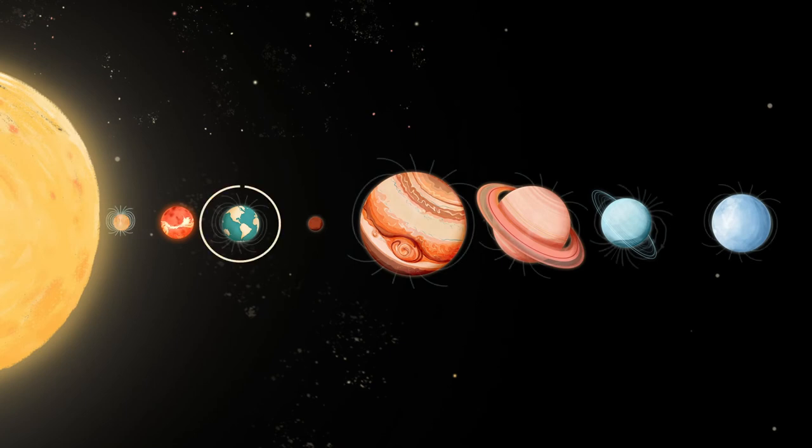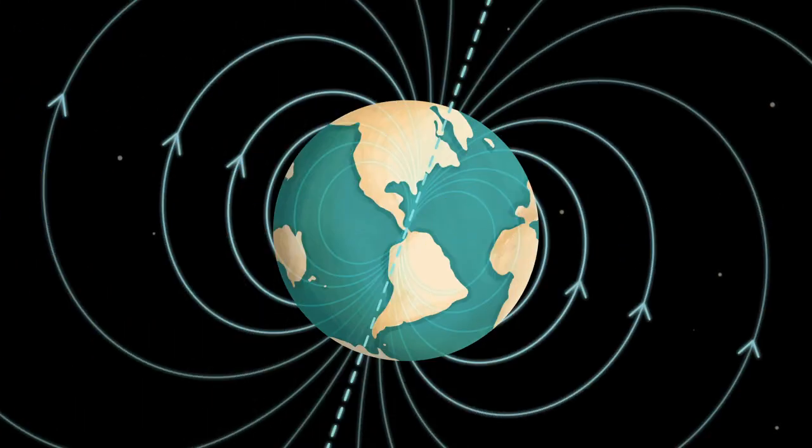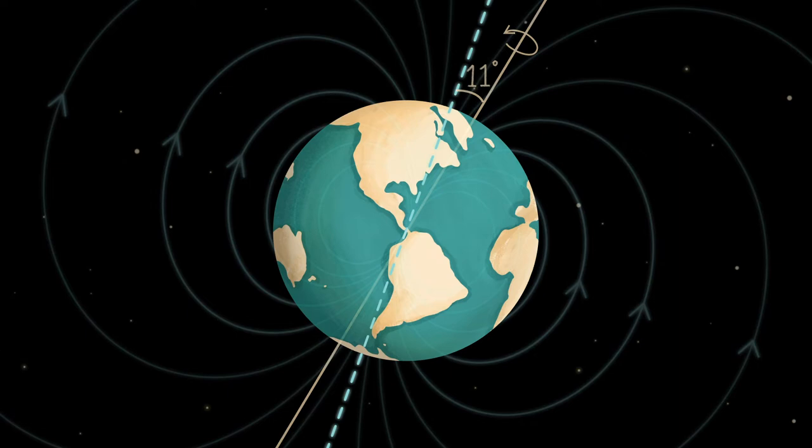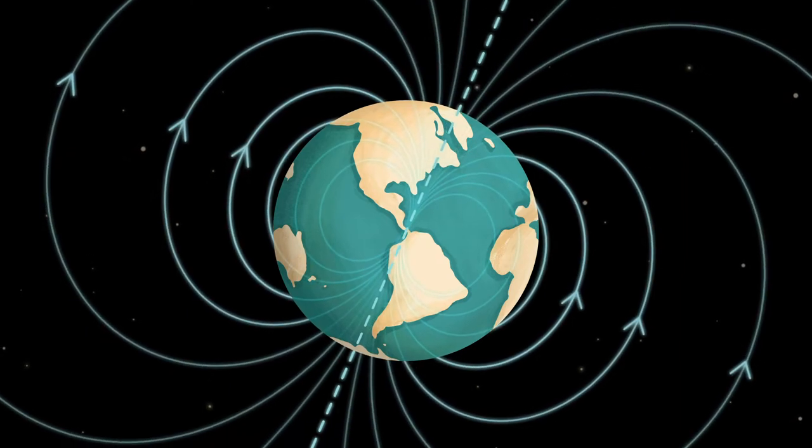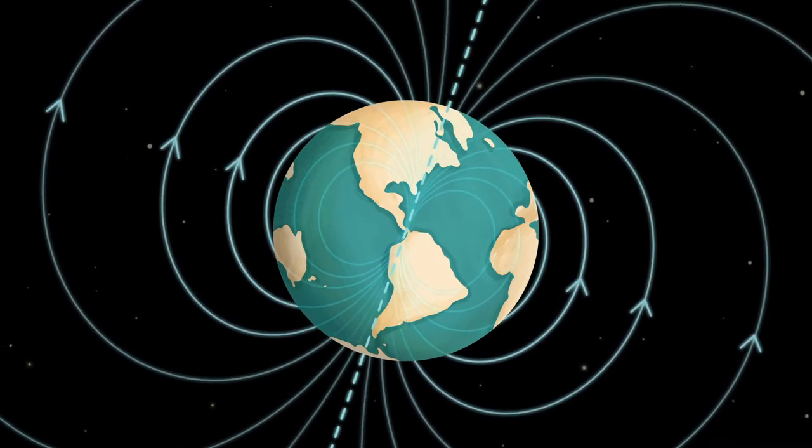We begin with Earth. At first glance, the Earth's magnetic field looks like that of a bar magnet in the center of the Earth tilted by 11 degrees. But upon closer inspection, we notice that the field moves and changes with time.